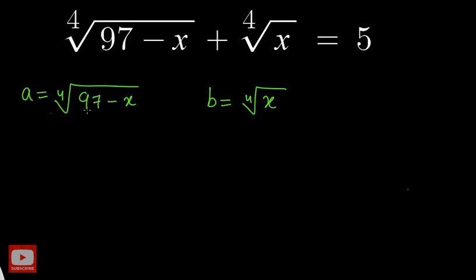Straight away we get one equation — the first term is a and plus the second term is b, so a plus b equal to 5. So we got one equation a plus b equal to 5 from the substitution.